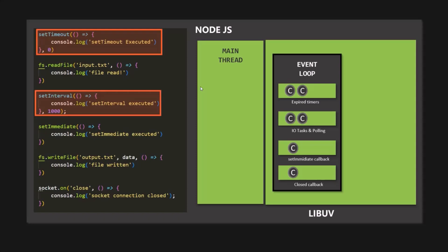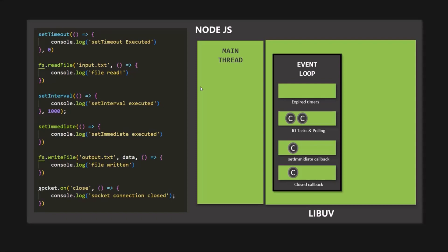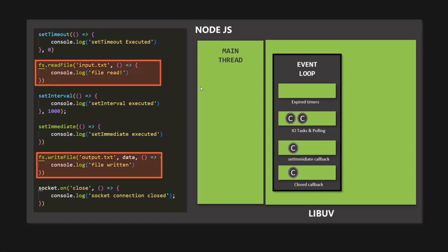For example, if we are in the first phase with seven callback functions, all seven must be executed before the event loop moves to the second phase. Once all callbacks in the second phase are executed, it moves to the third, and so on. In the second phase, the callback functions of I/O-related tasks are executed. I/O means tasks related to networking and file access — so callbacks attached to file read and write operations are stored in the callback queue of the second phase.